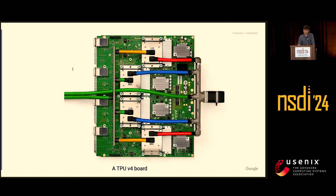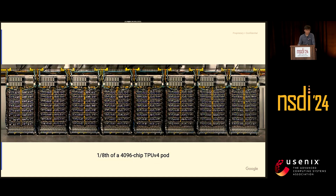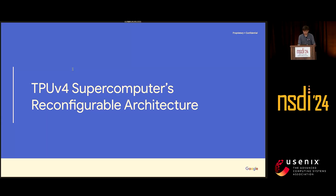Before we dive into the software workflow, here's a picture of the TPU v4 board we deploy in Google's data centers. There are four chips per board. On the left side of this chart you can see ports where the interconnect gets plugged in. This is one-eighth of a supercomputer we deploy. Each supercomputer has eight rows; this is one row with eight racks. You can see the yellow cables — these are the interconnect cables that get routed top-of-rack and then go to the circuit switches.